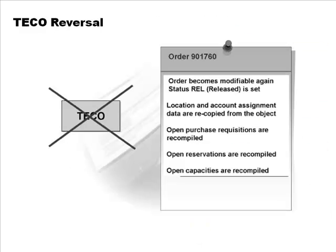It's possible to reverse a technical completion because what we thought was complete may not have been really complete. When you reverse it, all those processes get reversed: the order goes back to its old state, it's no longer in DECO status, the location and account assignment object are recopied from the object, open purchase acquisitions are recompiled, open reservations are recompiled, and open capacities are recompiled.